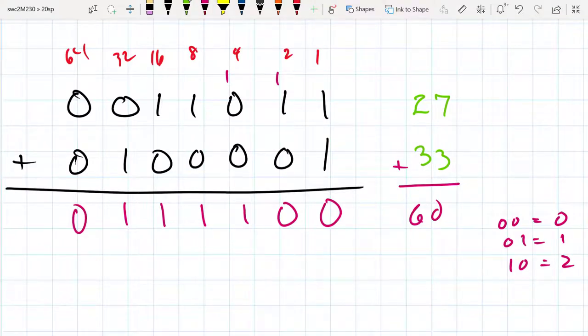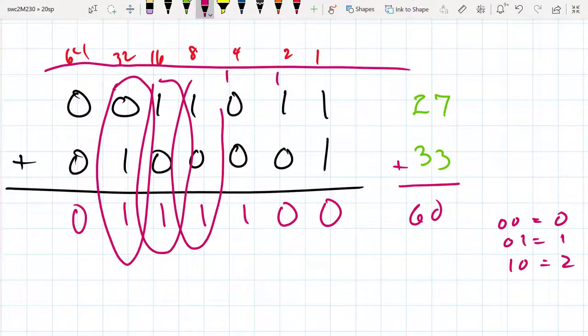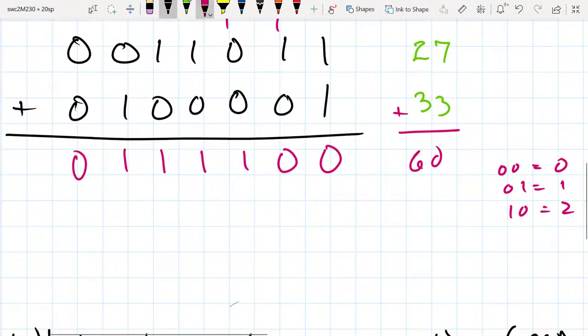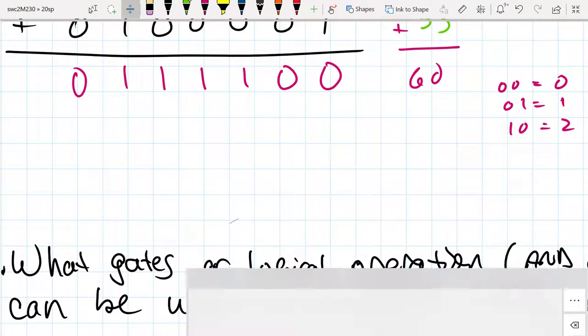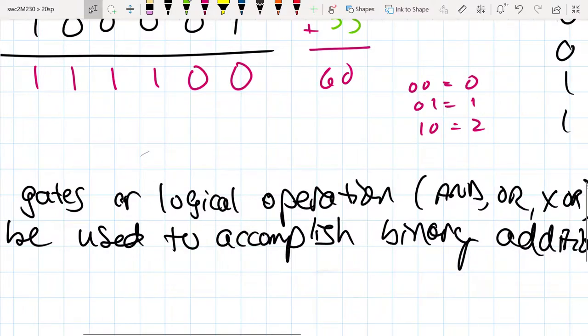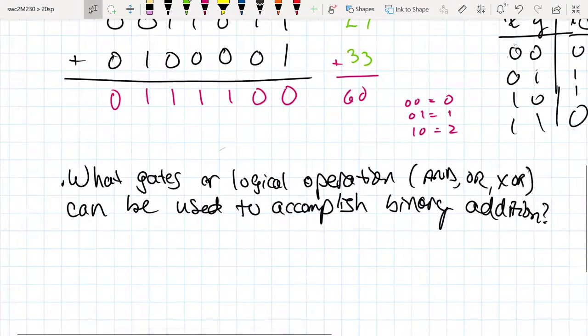Now the thing to pay attention to here is that there was some type of binary operation that occurred at each stage. We want to see if there's a logic gate that can work with two bits to give us that result.